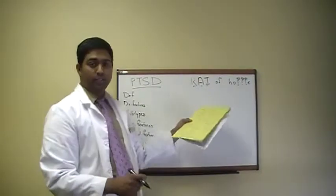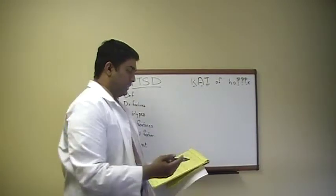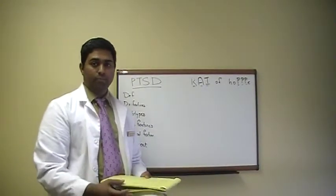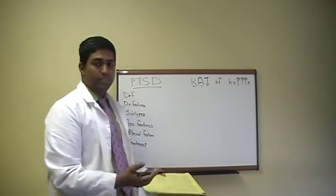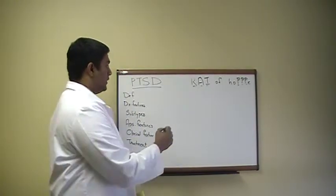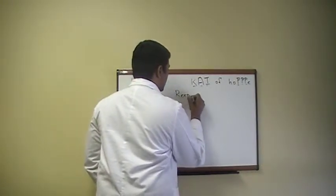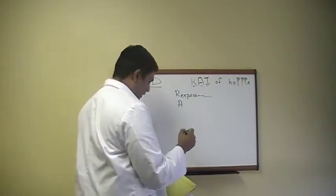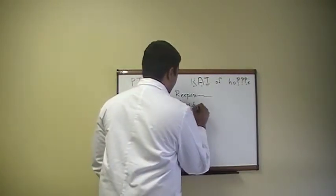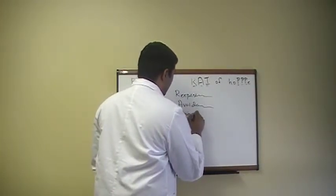Let me come to my first mnemonic, which is RAI. They are the triad for the characteristics of the PTSD symptoms. The R stands for re-experiencing. A is for avoidance. And I is for increased arousal.